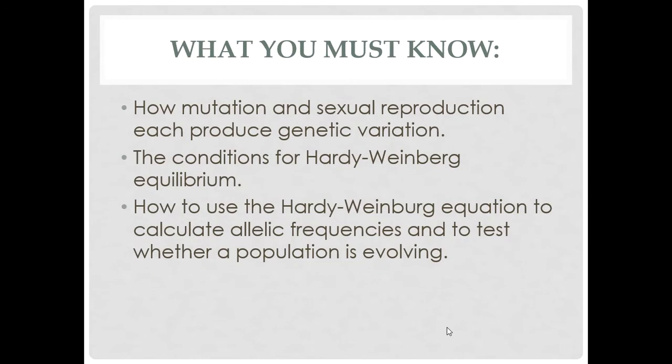This is a summary of what you have to know from chapter 23 about evolution in populations and Hardy-Weinberg equilibrium. You need to know how mutation and sexual reproduction produce genetic variation — we've basically already covered that. Mutation is just changes in DNA, which might change the proteins you code for. You also need to know the conditions for Hardy-Weinberg equilibrium and how to use the Hardy-Weinberg equation to figure out whether a population is actually evolving. Hardy-Weinberg equilibrium is an ideal situation in which a population is not evolving at all.